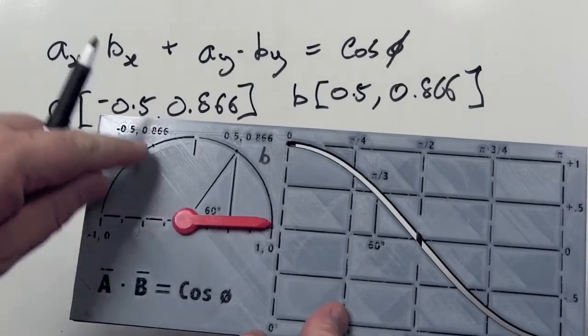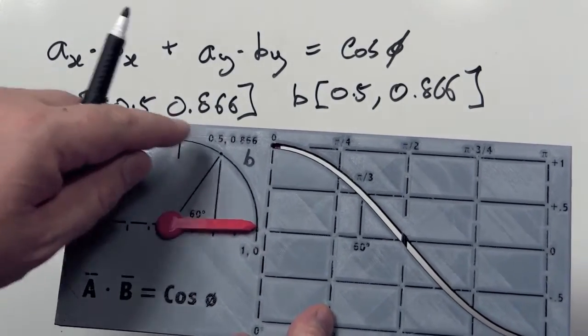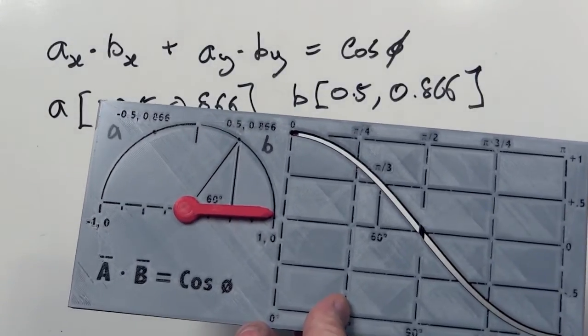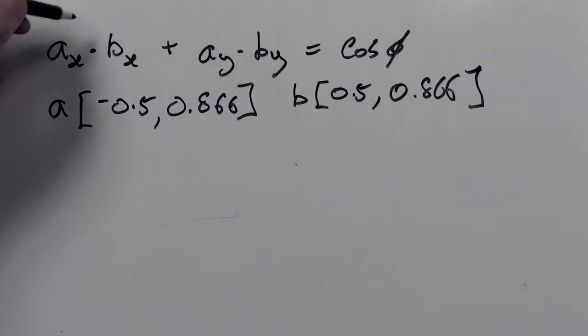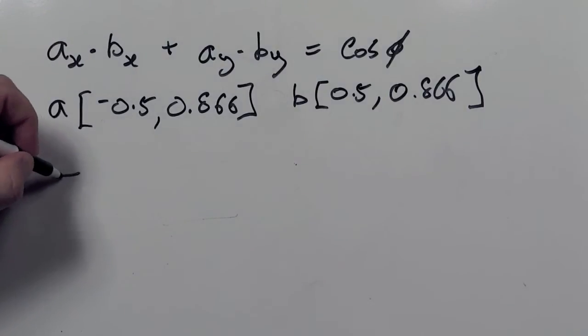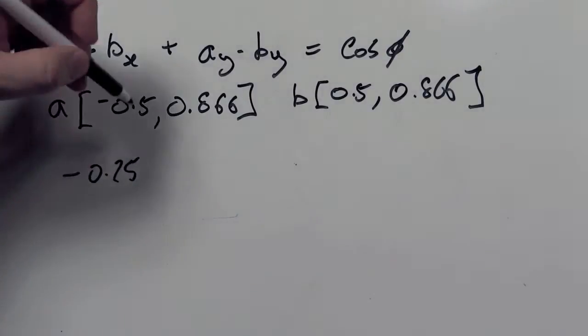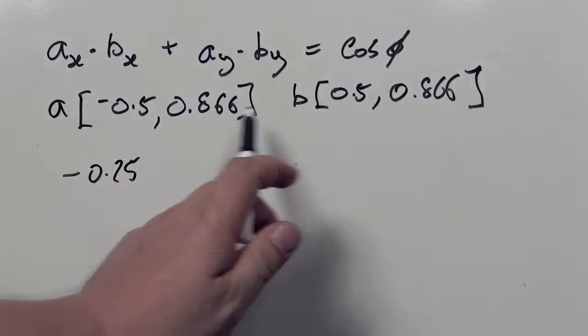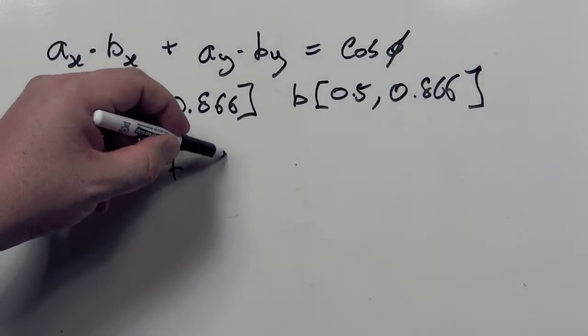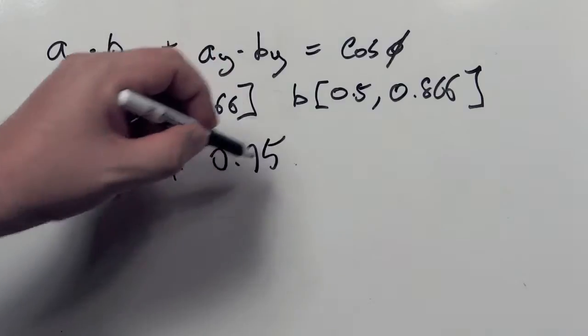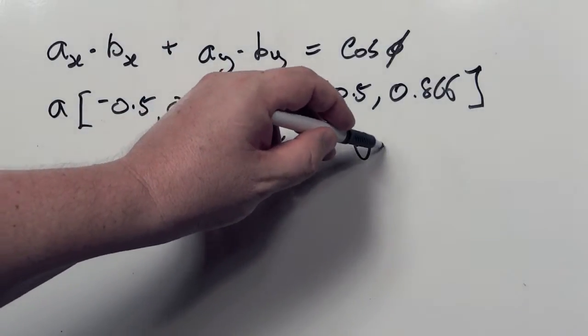Remember, they're unit vectors, so they have a length of 1, and they're essentially points on a circle with a radius of 1. If we calculate our X side, it's -0.25, and our Y side, multiply these two together, we get 0.75. We add them together, and we get 0.5.